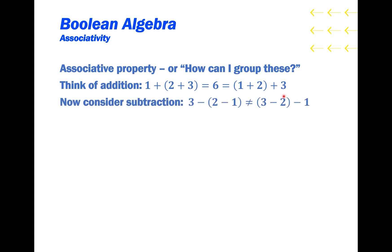But if you consider subtraction, 3 minus 2 minus 1 will differ if you do the 2 minus 1 first before the 3 minus 2. That is because addition is associative while subtraction is not.